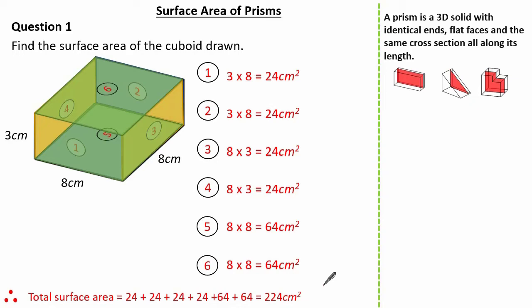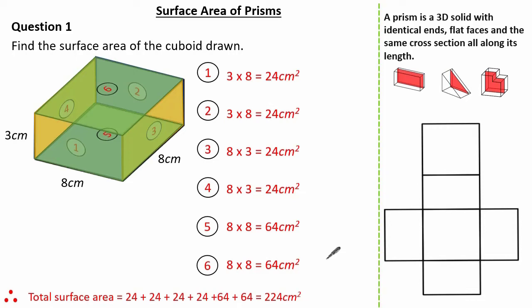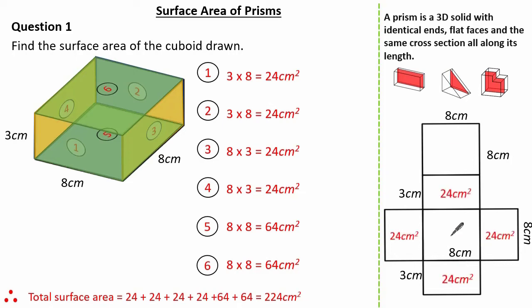Therefore the total surface area is the sum of all these faces, giving us 224 cm². Another way to work out the total surface area is to identify the net and fill in each face as we work through. Once we identify the net we can identify the lengths. Working out each face gives us the same calculations, ending with a total surface area of 224 cm².